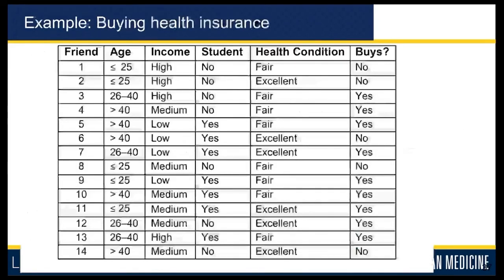For this video we will use the example dataset on buying health insurance. This dataset has 14 instances numbered 1 to 14, each instance has four features — age, income, student, and health condition. All four are either binary or categorical features. Age has three possible values: less than 25, between 26 and 40, and above 40. Income has three values: low, medium, or high.